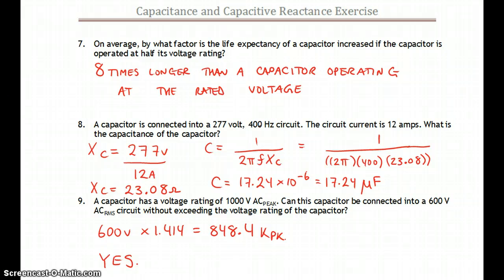Voltage divided by current gives us 23.08 ohms of reactance. And when you pump that into the equation for capacitance, then you end up with 17.24 times 10 to the negative 6 or 17.24 microfarads.